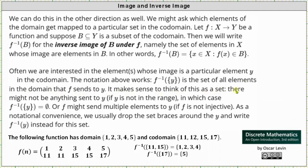It makes sense to think of this as a set. There might not be anything sent to y if y is not in the range, in which case the inverse image of the set containing y under F is equal to the empty set. Alternatively, F might send multiple elements to y if F is not injective. As a notational convenience, the curly brackets around y can be dropped, but we will continue using set notation with curly brackets.